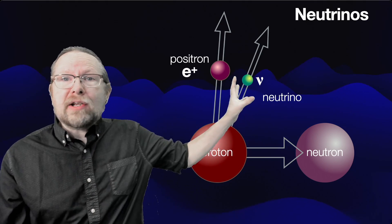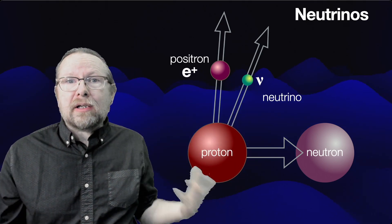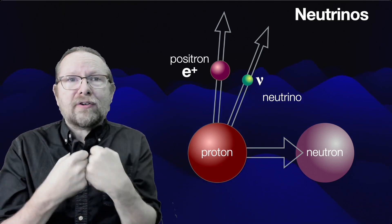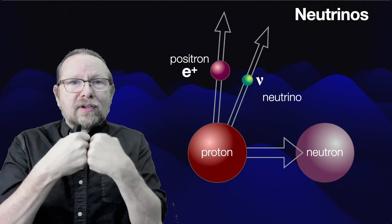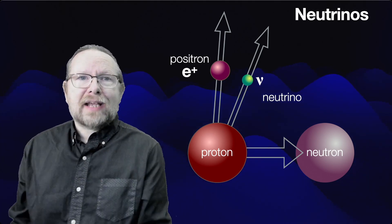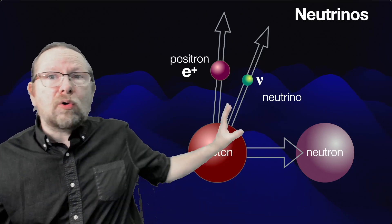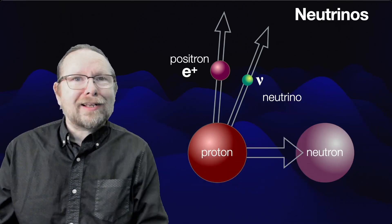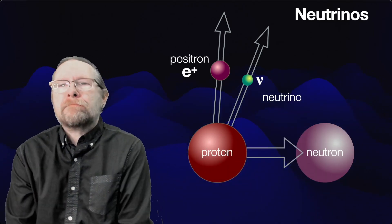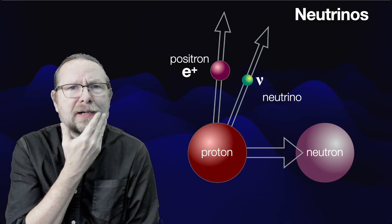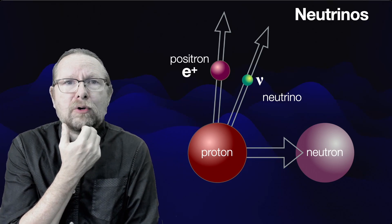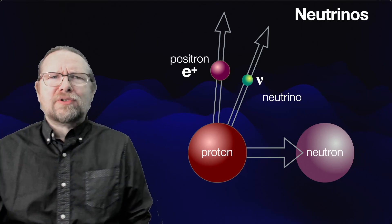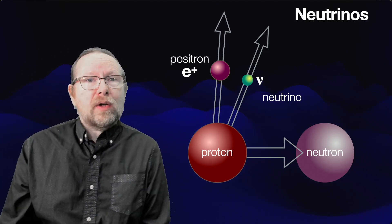Neutrinos don't have electric charge, so they don't interact very strongly with charged things like protons and electrons. When two things collide in our everyday lives, that collision is the result of electromagnetic repulsion between the electrons in atoms. But if an object has no charge and no electrical force, it can just go right between the electrons and protons and go right through the earth. A neutrino could go through a trillion miles of lead before having a 50-50 chance of being stopped — really, really weakly interacting with matter.